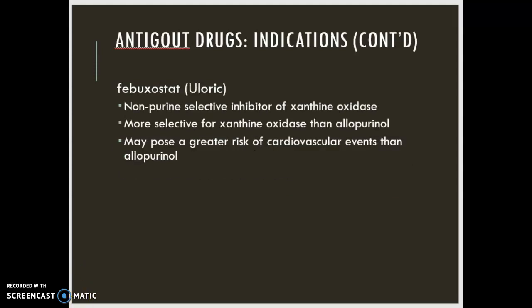We have another medication used for the interval: febuxostat, or Uloric. This is a non-purine selective inhibitor of xanthine oxidase. It's more selective for xanthine oxidase than allopurinol is, but it isn't used as often because it has a black box warning that it may pose a greater risk of cardiovascular events than allopurinol.